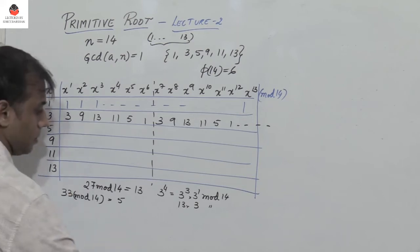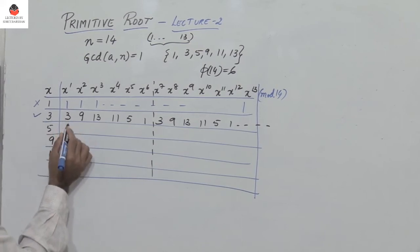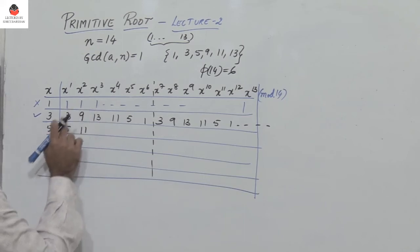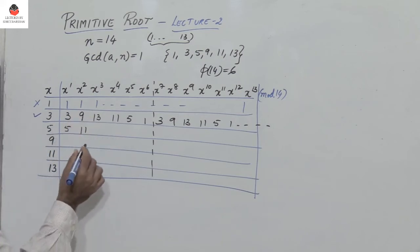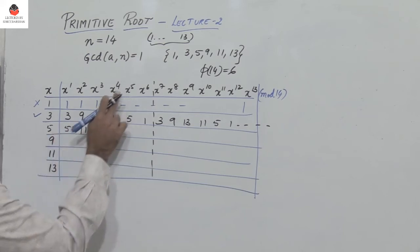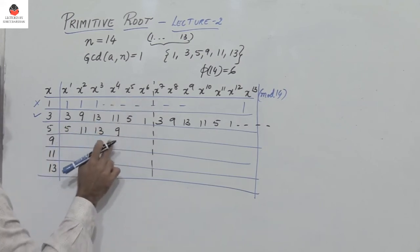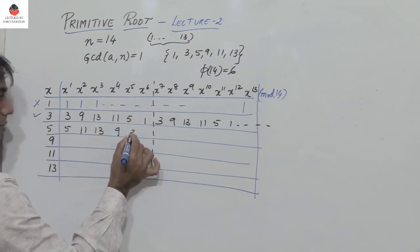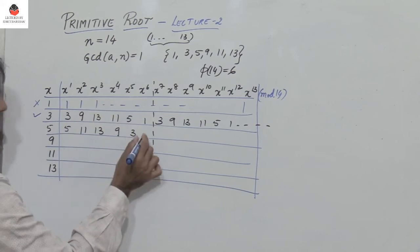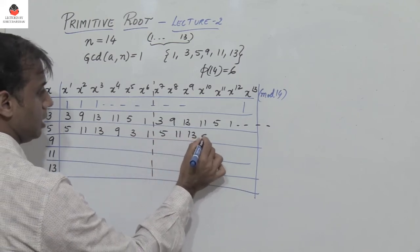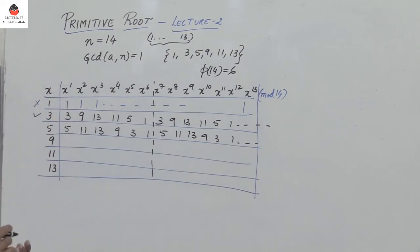Next, consider 5. 5 power 1 mod 14 is 5. 5 squared is 25 mod 14, which is 11. 5 cubed is 11 times 5 mod 14 — 55 mod 14 gives us 13. 5 power 4 is 13 times 5 mod 14, which is 9. 5 power 5 mod 14 is 9 times 5 mod 14, which is 3. And then 3 times 5 mod 14 is 1. So the sequence is 5, 11, 13, 9, 3, 1 and repeats. Again, 5 generates all the numbers which are relatively prime to 14 — all 6 numbers. So 5 is a primitive root of 14.